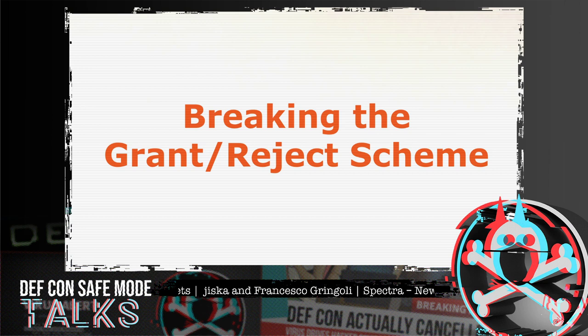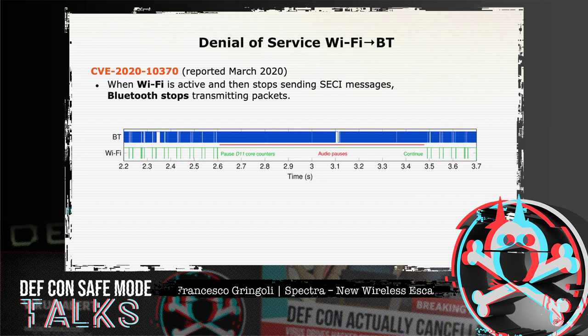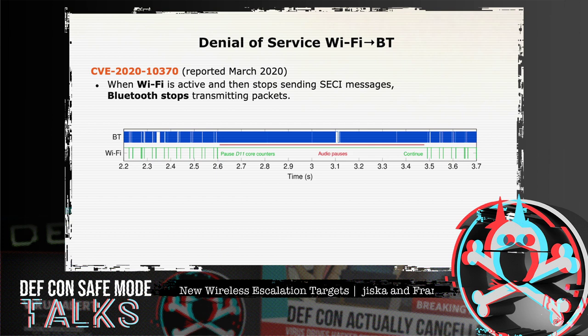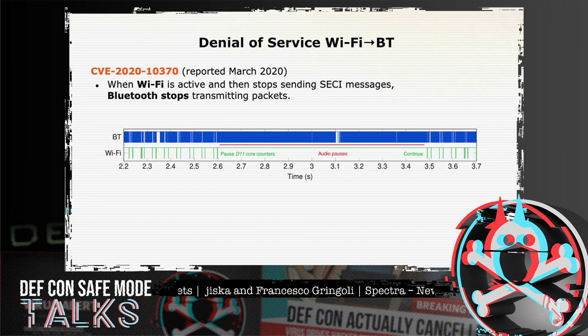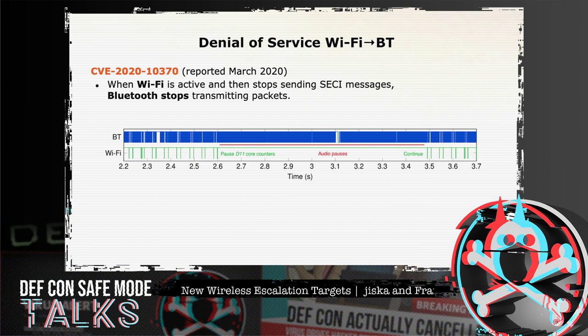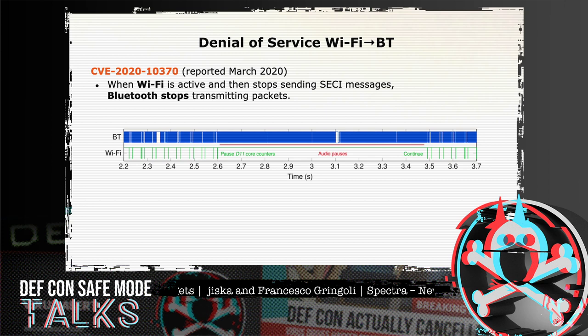To break the grant/reject scheme, a scenario was set up watching a movie that downloads content over Wi-Fi while sending audio to a Bluetooth headset. SECI grant messages from Wi-Fi tell Bluetooth when it can transmit audio. By introducing a few lines into the U-code configuring the Wi-Fi chipset remotely from the air interface, Wi-Fi is prevented from sending SECI grant messages to Bluetooth. Between 2.6 and 3.5 seconds, no more SECI messages are transmitted and no sound is heard from the headset. This demonstrates a denial of service attack from the Wi-Fi side against Bluetooth.